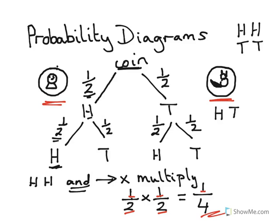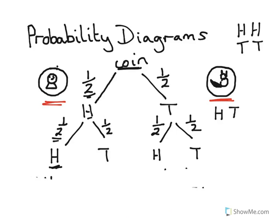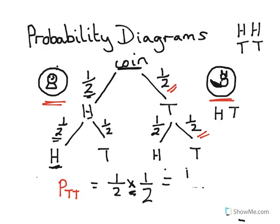If we instead wanted the probability of getting two tails, that would be exactly the same probability as two heads. The first probability of getting one tail is a half, and another tail is another half. So the probability of two tails is a half times a half — because we need a tail AND a tail, telling us to use the multiply sign — which also equals one quarter.